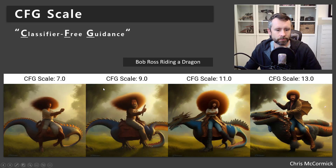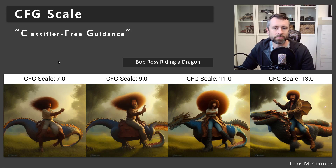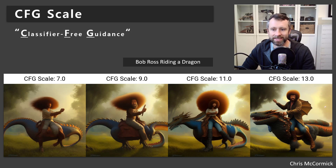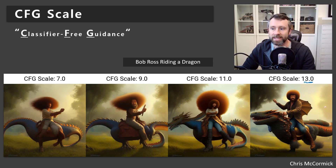Sometimes you'll find that to be true. I tried to generate Bob Ross riding a dragon, and for relatively low CFG values — seven, nine — there are clearly some problems: no dragon head, just two tails. At 11 it's getting better, but there's a secondary giant afro in the background. Things look more sensible at a value of 13. So seven to 13 are typical values for this parameter, but you're always welcome to explore outside of that range.